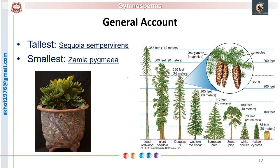The seeds are naked. The tallest gymnosperm by height is Sequoia sempervirens, with a height of 112 meters. By size (biomass production), the largest gymnosperm is Giant Sequoia. The smallest gymnosperm is Zamia pygmaea — note these names as they are important for objective questions. Here we complete the general characteristics of gymnosperms.